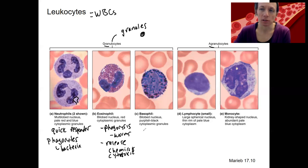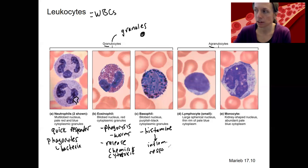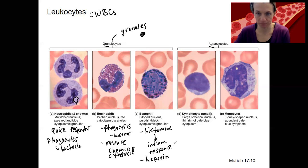Basophils are basically what you think of when you think of an immune or inflammatory reaction. They release histamine, which results in a local reaction to a substance — an acute allergy. So these are important for inflammatory response. They also release heparin, which is an anticoagulant that will briefly come up when we talk about coagulation and blood clotting.